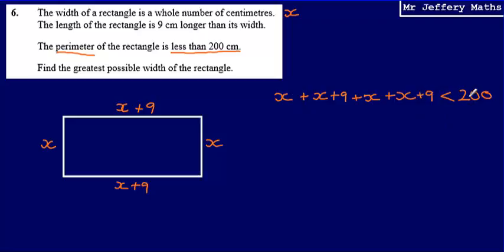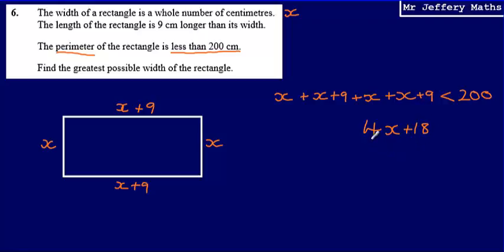All that's left is to solve this inequality, and that will allow me to find the greatest possible width of the rectangle. To solve this inequality, the first thing I'm going to do is collect the x's together. x plus x plus x plus x gives me 4x. And then nine plus nine gives me 18. So I can say that 4x plus 18 will be less than 200.